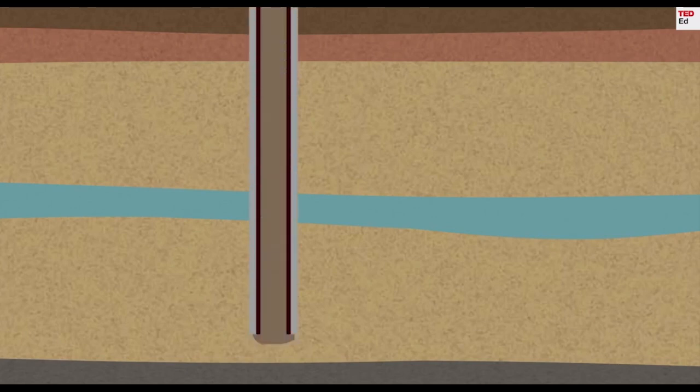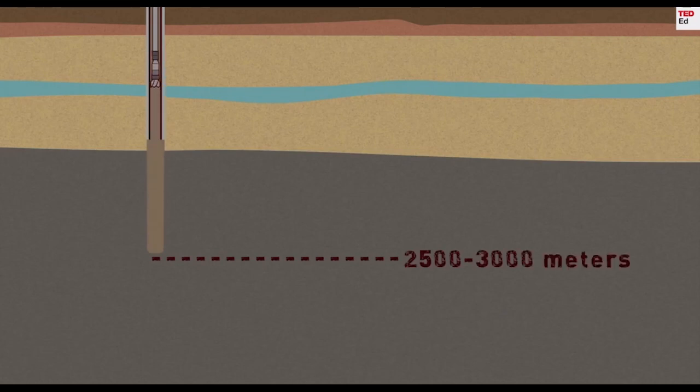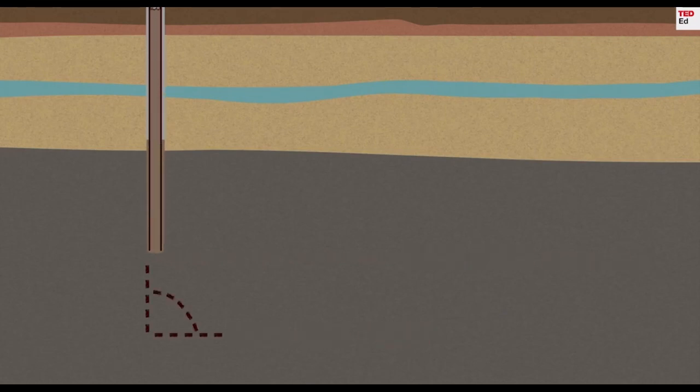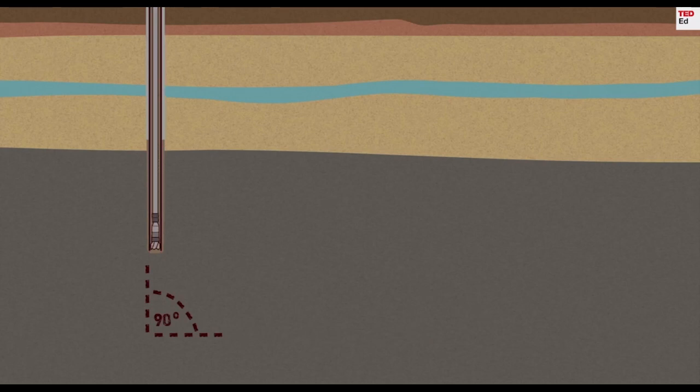When the well reaches 2,500 to 3,000 meters, it's at its kickoff point, where it can begin the process of horizontal drilling.